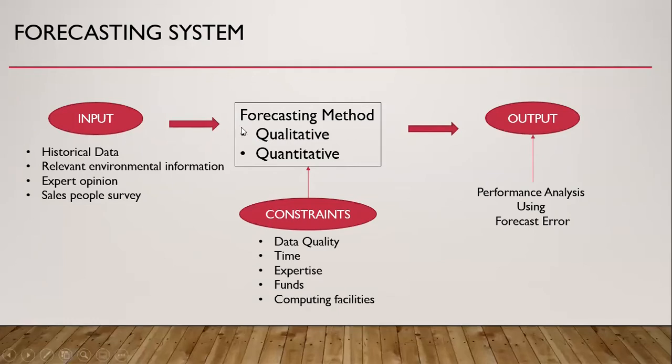Forecasting can be considered as a system with input, output, and methods. Input includes historical data, relevant environmental information, expert opinion, and salespeople survey. Then there is method, that is forecasting method, which may be qualitative or quantitative. And output is the result of forecasting, and that result can be analyzed. That is performance analysis using forecast error. There are certain constraints. For example, data quality, time, expertise, funds, and computing facilities.